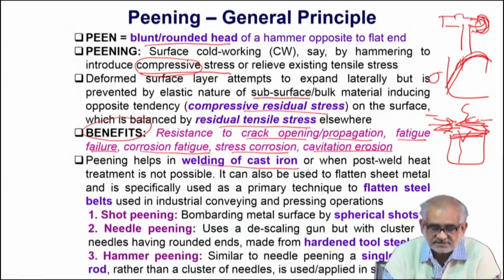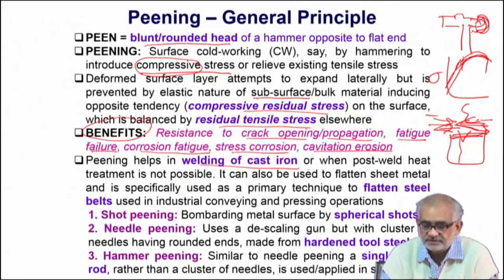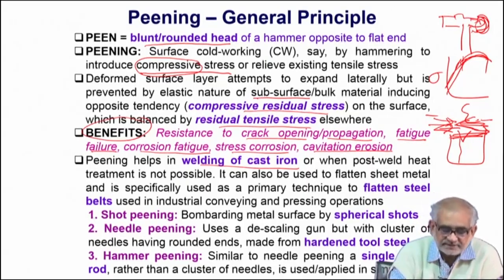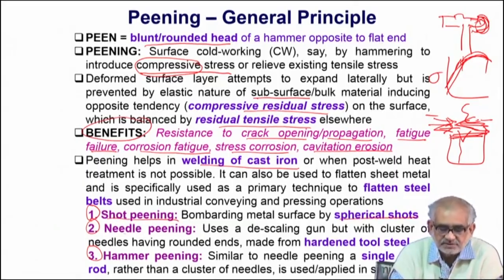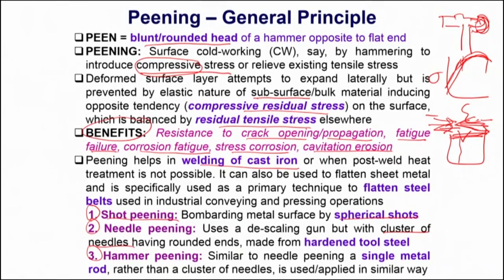This can be done on a flat surface or even on curved surfaces with complex geometry. There are three possible ways of introducing residual compressive stress: shot peening using spherical shots; needle peening using a cluster of very fine ultrafine needles made from hardened steel; and hammer peening using a single metal rod hitting onto the surface. Shot peening is the finest, and hammer peening produces the widest level of deformation on the surface.